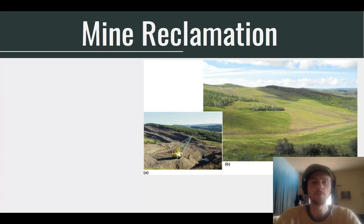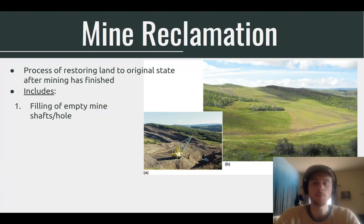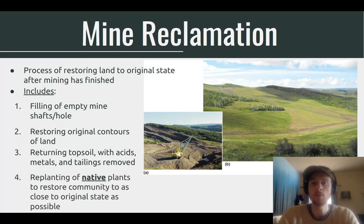A solution to mining problems is mine reclamation — the process of restoring a mine to its original state once it's no longer in use. Step one: fill the hole back in with rock and soil. Step two: restore the contours of the land to roughly the same shape, elevation, and slope as before. Step three: return the topsoil after removing harmful chemicals, acids, leftover tailings, and metals. Finally, replant the area with native vegetation — the roots stabilize soil to prevent erosion, and native plants allow native animal species to return and restore the community as close as possible to its original conditions.